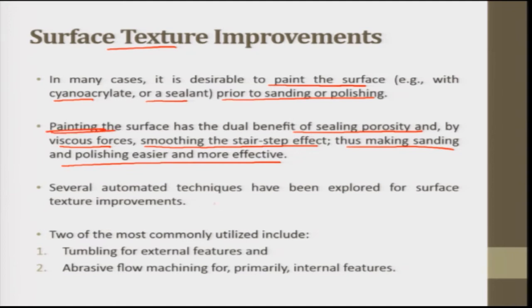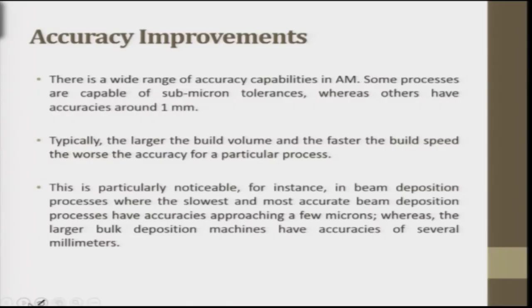Several automated techniques have been explored for surface texture improvement. Two of the most commonly utilized include tumbling for external features and abrasive flow machining for primarily internal features. Abrasive flow machining uses abrasive flow to achieve the required surface finish on internal features. Tumbling keeps the material in a rotating tumbler where the powder improves the surface texture.